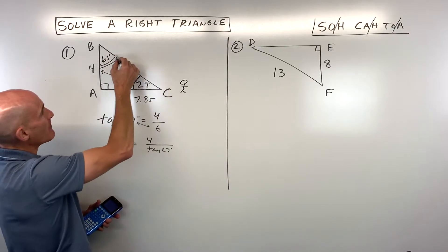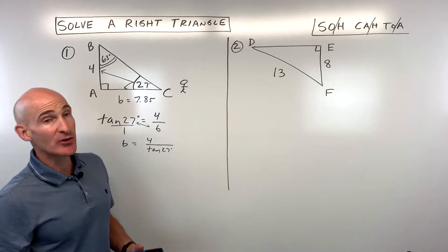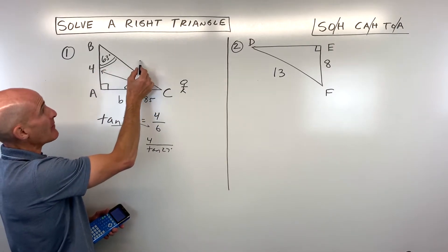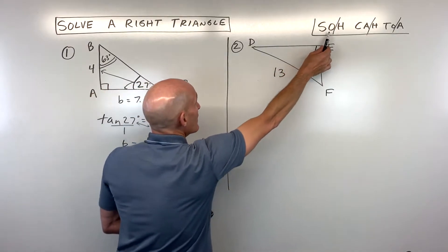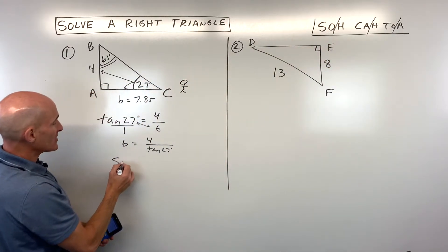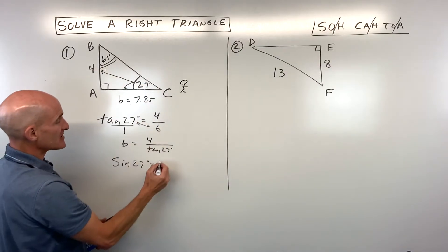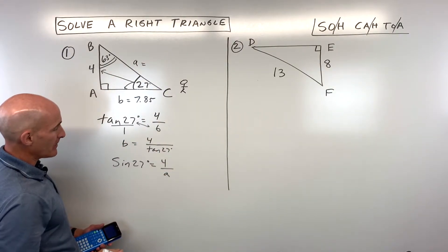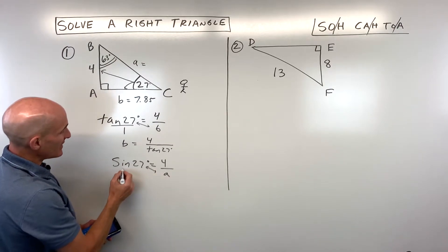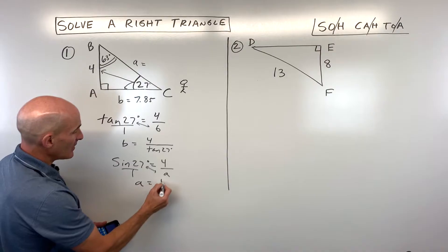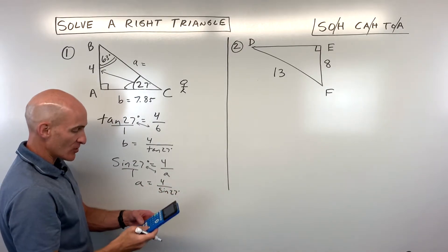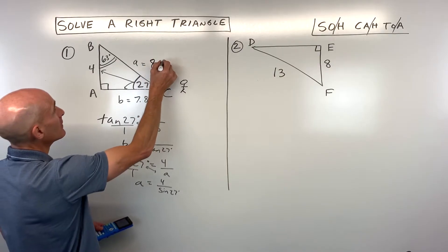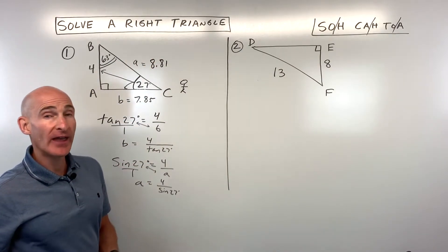Now we just need to solve for the hypotenuse. Going back to the original numbers, we ask: what trig function ties together this angle, the opposite side, and the hypotenuse? Opposite over hypotenuse is the sine ratio. So sine of 27 degrees equals the opposite side 4 over the hypotenuse, side a. Switching on the diagonal gives us a equals 4 divided by sine of 27 degrees. That comes out to approximately 8.81. You've now solved the triangle — all angles and all sides found.